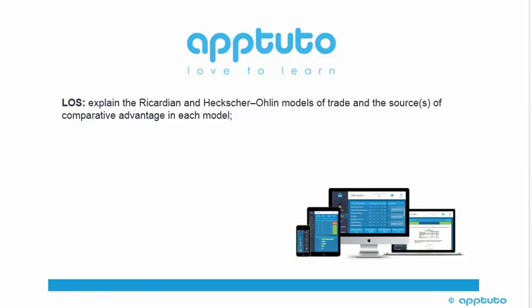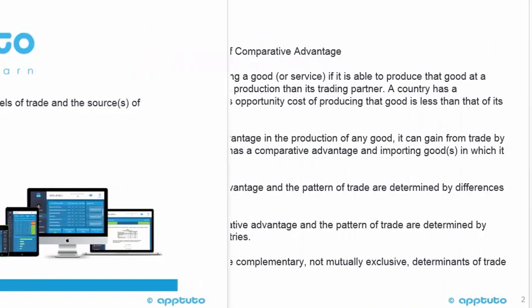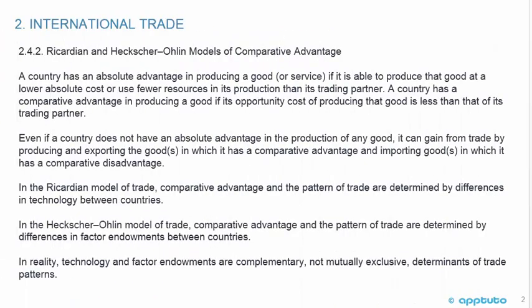This LOS explains the Ricardian and Heckscher-Ohlin models of trade and the sources of comparative advantage in each model. International Trade: Ricardian and Heckscher-Ohlin models of comparative advantage.